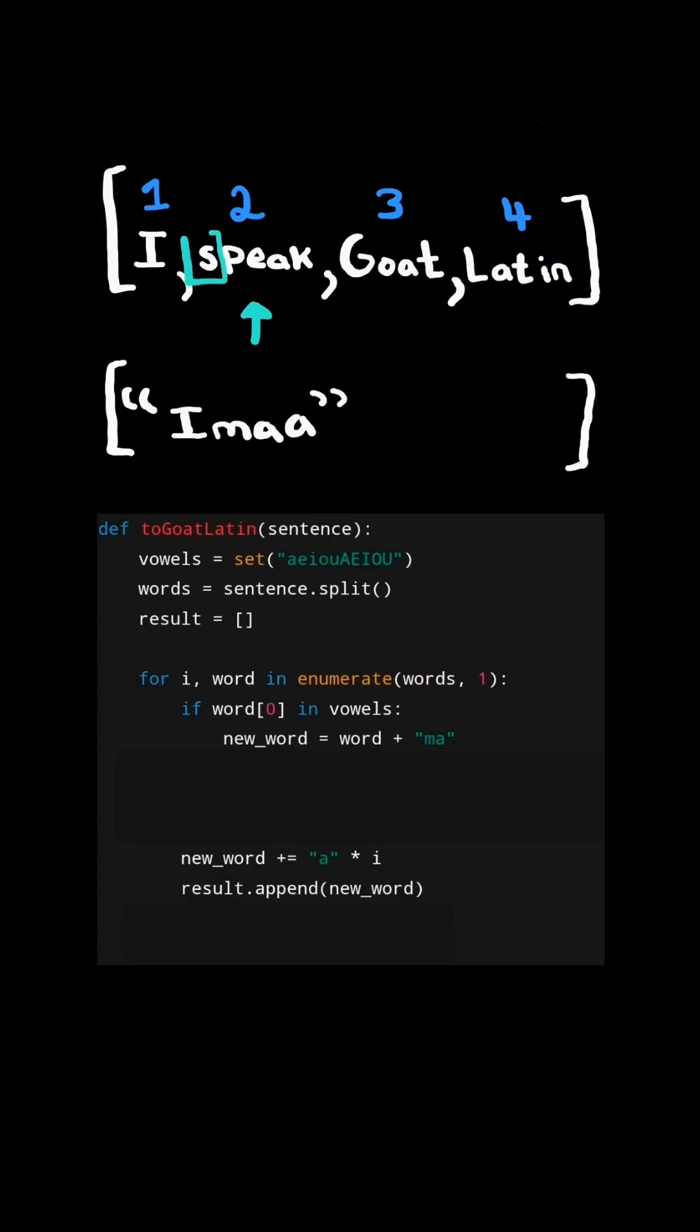We check the first letter in the word. In this case, it's a consonant, so it does not belong to the vowel set. And so we will slice the string and only take the second character onwards. And then we want to add the first letter of the word, and then we add the M-A to the end of the word.